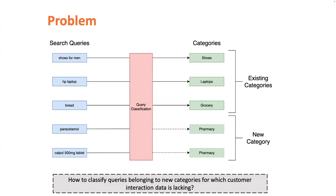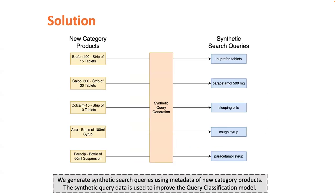Now, how do we tackle this problem for such new categories? In this work, we present a novel approach to mitigate the cold start issue in product ranking by synthetically generating queries, as well as simulation of customer interactions. We explore ways in which LLMs can be used to generate synthetic queries directly from the product catalog, which would be used to improve our query classification model and handle new categories effectively.